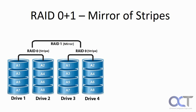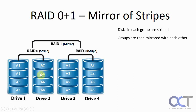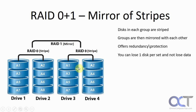Now we're going to talk about some hybrid RAID levels. We'll start with RAID 0 plus 1, which is called a mirror of stripes. Disks are made into groups — Group 1 and Group 2 — and within each group the data is striped for performance. Then you mirror each group, so these two disks are a mirror copy of the other two. You could lose a disk in each group and still be okay, but if you lose two disks in the same group you'll break the mirror and need to rebuild.